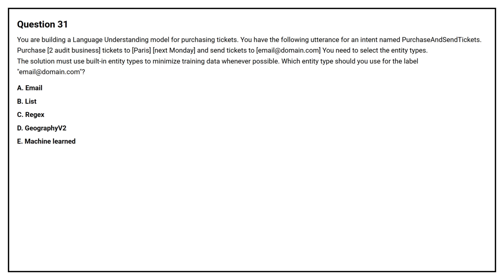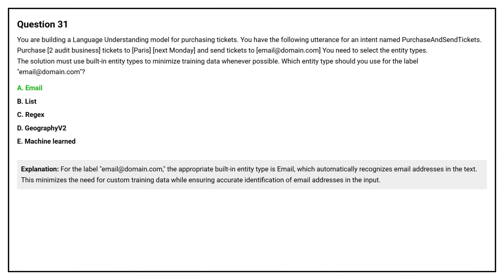Option A: Email. Option B: List. Option C: Regex. Option D: Geography V2. Option E: Machine Learned. The correct answer is Option A, Email. For the label email@domain.com, the appropriate built-in entity type is Email, which automatically recognizes email addresses in the text. This minimizes the need for custom training data while ensuring accurate identification of email addresses in the input.